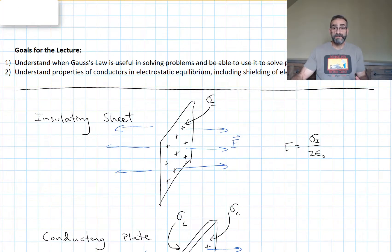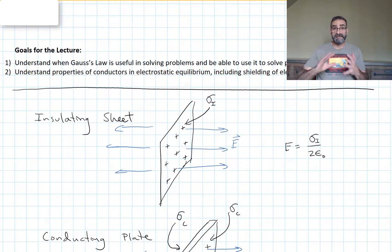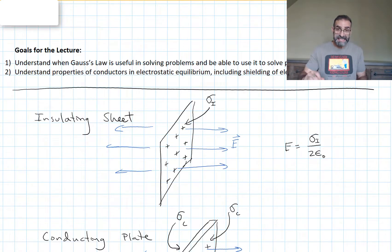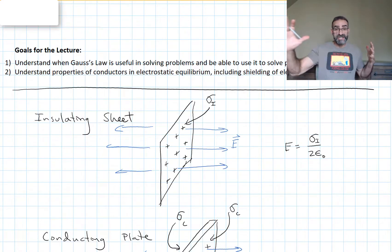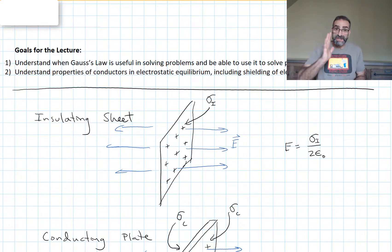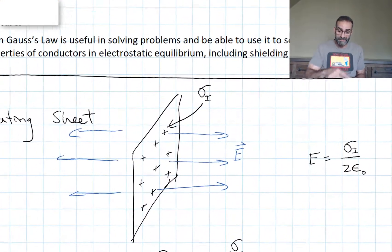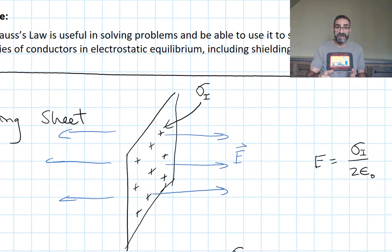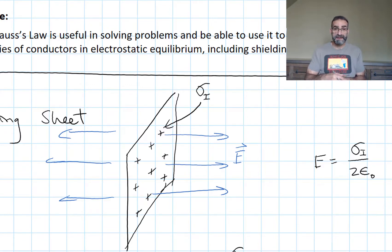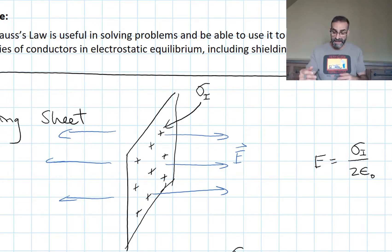Let's start with a quick review of insulating sheets and conductive plates — of course I'm talking about infinitely large sheets and plates. For an insulating sheet, an infinitely large sheet of charge, the charge can be very thin — really just one layer. And if it has a charge density sigma_i, we can use Gauss's law and come up with the electric field near this sheet: sigma over two epsilon naught.